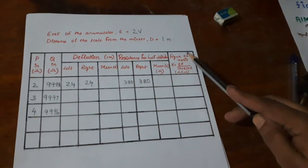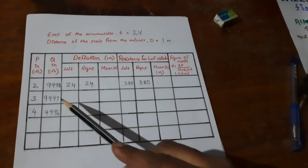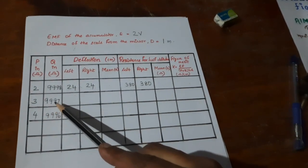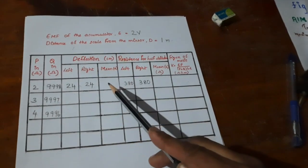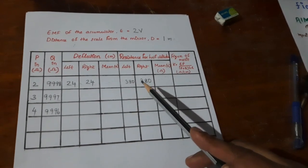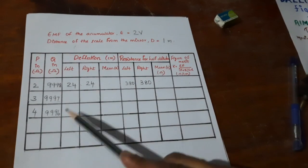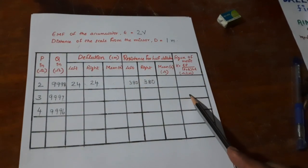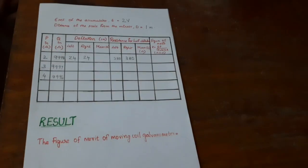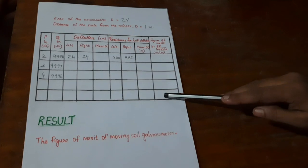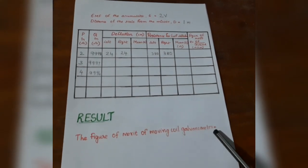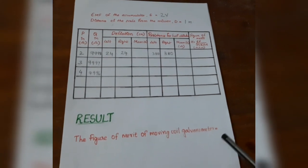What you have to do is repeat the experiment with P as 3 ohms so that your Q will be 9997. Do the deflection to the right, make it half deflection and find out the resistance in R in order to make it half. Then reverse the commutator to the other side and take the readings, tabulate your K. Repeat the experiment for various values of P and the corresponding values of Q. The average value of K can be calculated. The average value can be represented as a result, the figure of merit of moving coil galvanometer, and it will come to in the order of micro amperes per meter.